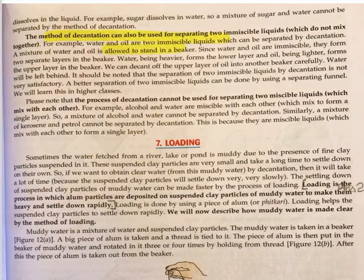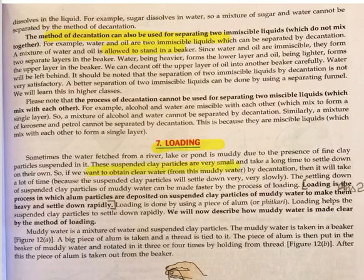Sometimes the water fetched from a river, lake, or pond is muddy due to fine clay particles suspended in it. These suspended clay particles are very small and take a long time to settle on their own. The settling down of suspended clay particles of muddy water can be made faster by the process of loading. Loading is the process in which alum particles are deposited on the suspended clay particles in muddy water to make them heavy and settle down rapidly.